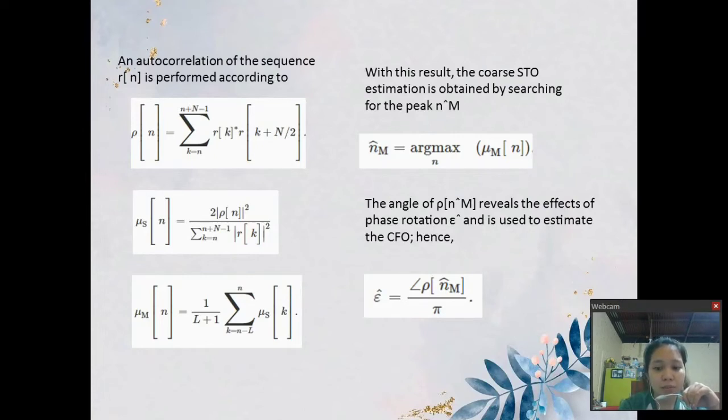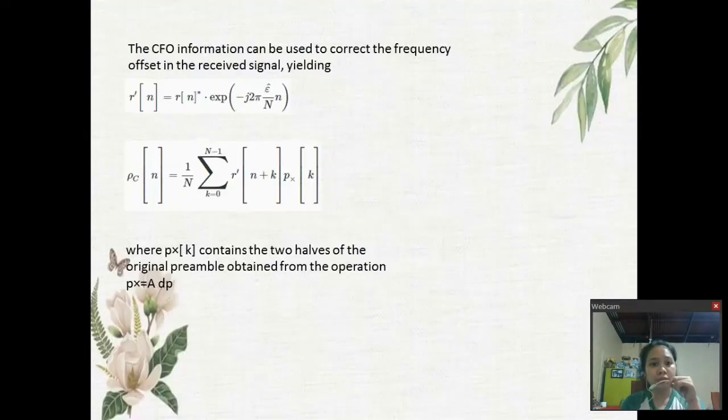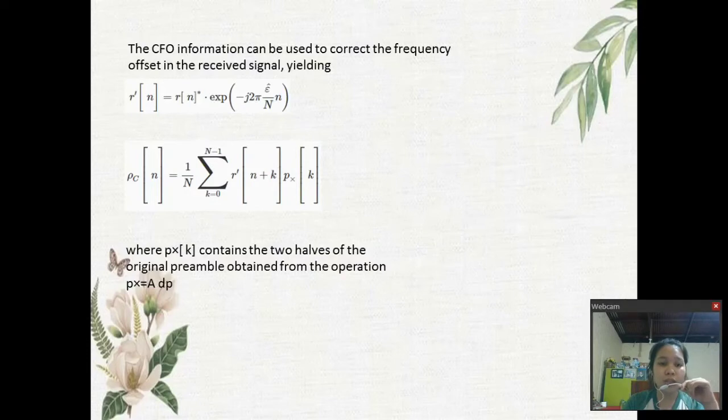The angle of P of Nm reveals the effects of phase rotation and is used to estimate the CFO. The CFO information can be used to correct the frequency offset in the received signal yielding R min of N. This operation allows the usage of a sharper metric employing cross-correlation with the transmitted preamble which is given by the matrix Pc, where Px of K contains the two halves of the original preamble obtained from the operation Px equals ADP.